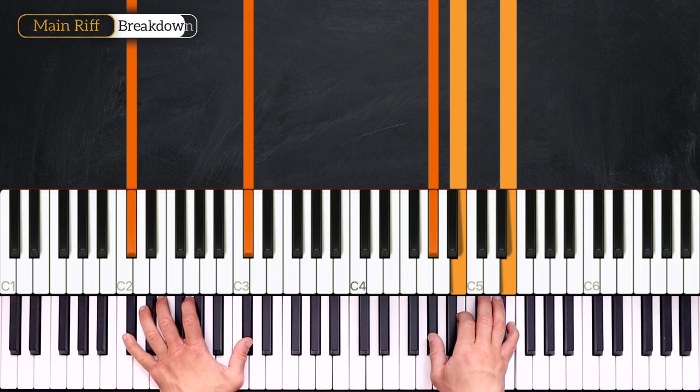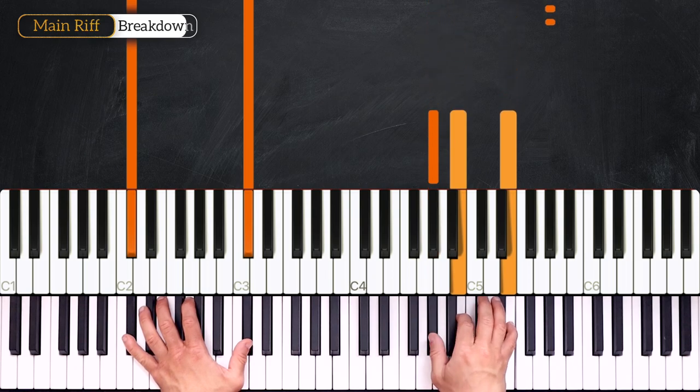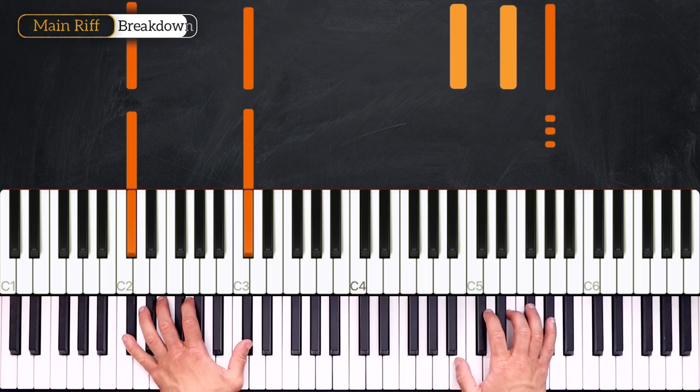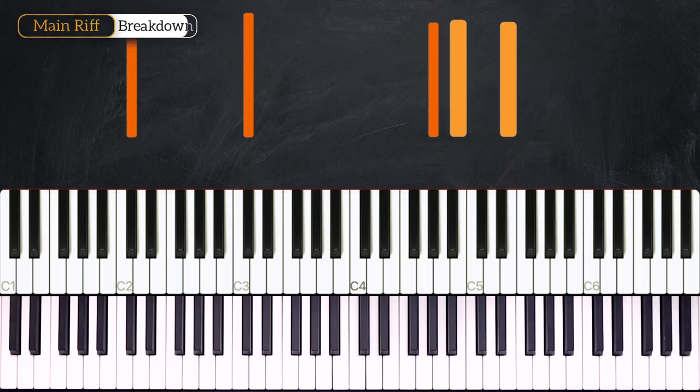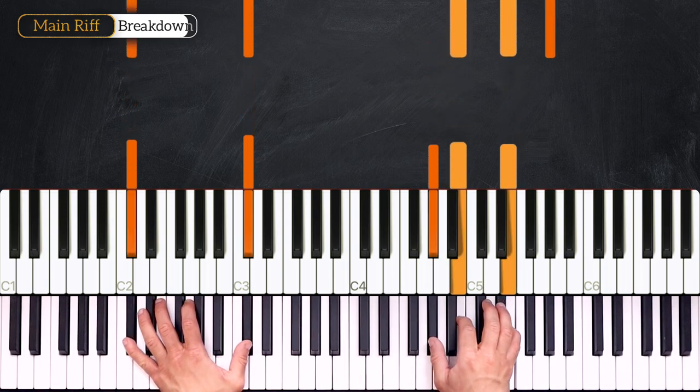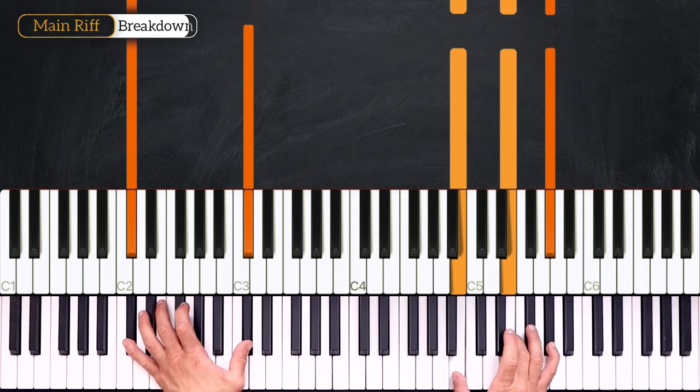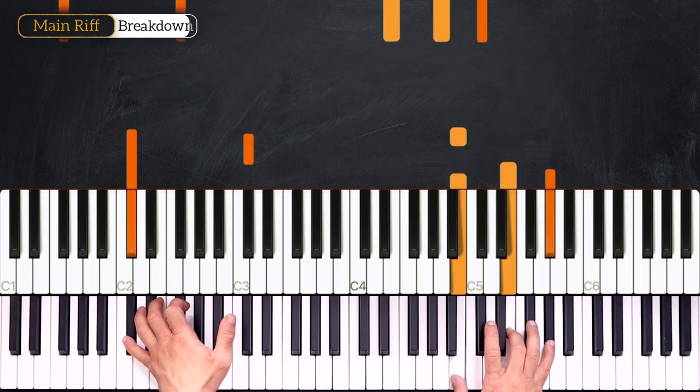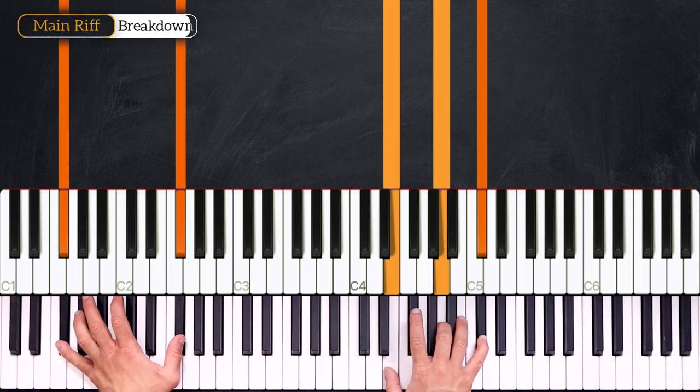Very nice. Now from here I'll repeat the C sharp minor 7 on the right hand, but I'll take the G sharp from here up one octave. So it goes 1, 2, 3, 4, 1, 2, 3. Now we use the same rhythmic pattern into F sharp minor 7.